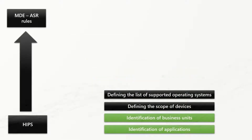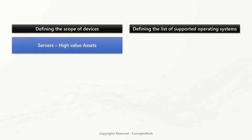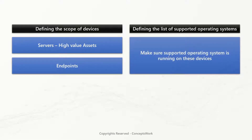The next step is to define the scope of devices and ensure supported operating systems are installed. For initial deployments, you may not want to target high-value assets like servers first, to avoid any productivity impact. Once you have decided which assets — servers or endpoints — you are targeting, make sure they are running an operating system supported by attack surface reduction rules.